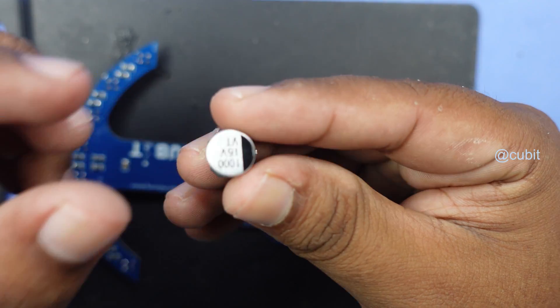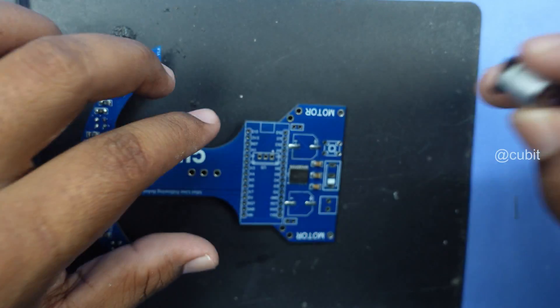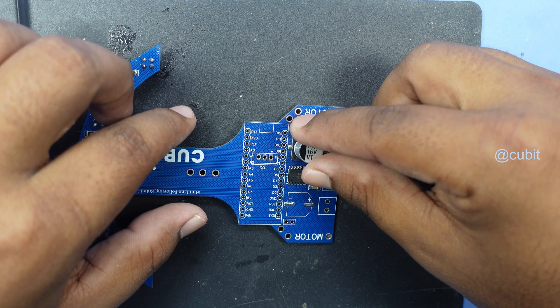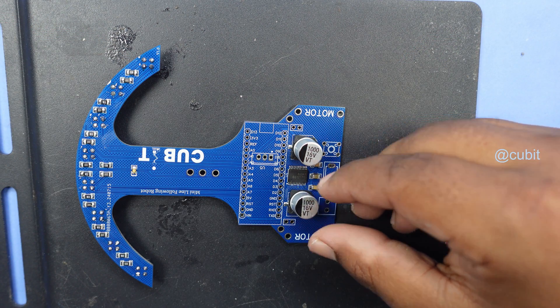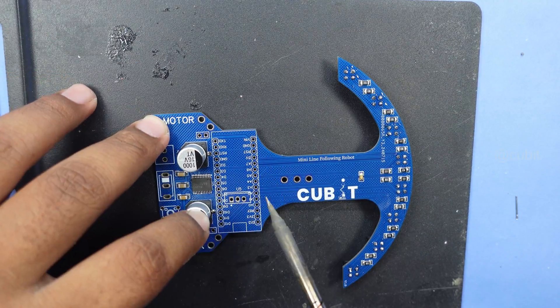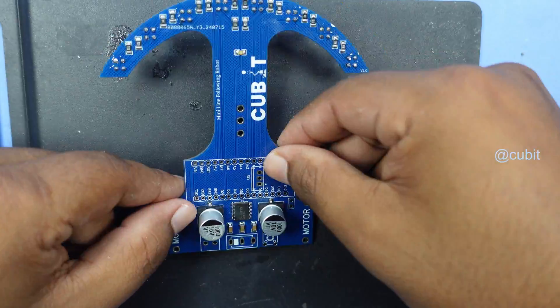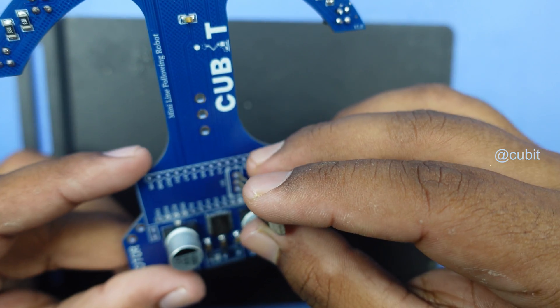Moving forward, we place two 16-volt, 1,000 microfarad capacitors on the PCB. After finishing the soldering of these components, we add the voltage regulator IC, the 7805, which will provide a steady 5-volt supply for the circuit.